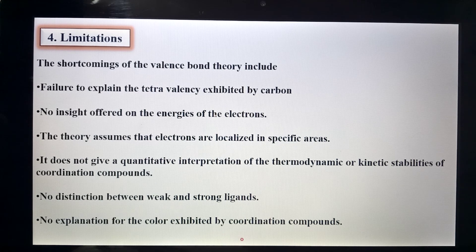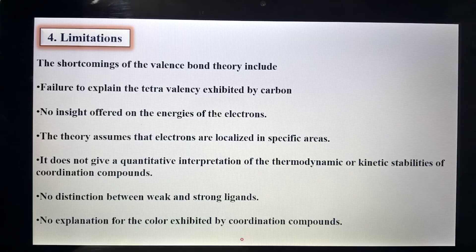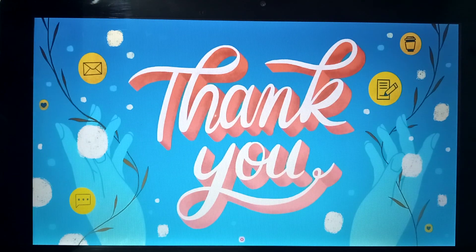The sixth drawback is that there is no explanation for the color exhibited by coordination compounds. Transition metals are known to form colored compounds, but valence bond theory cannot explain this. This is explained by another theory — Crystal Field Theory, or CFT — which we will study in the next classes. This is all about this lecture. Thank you so much.